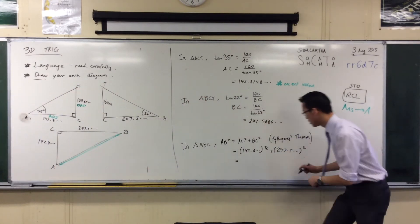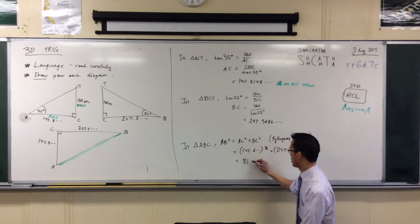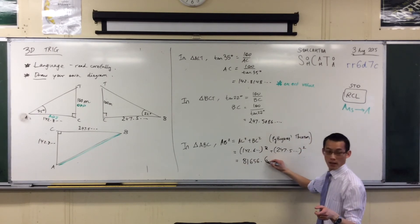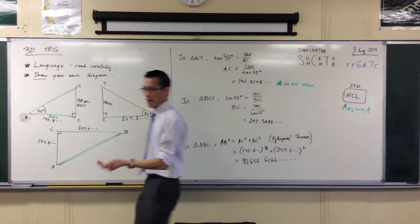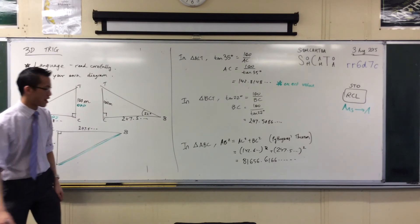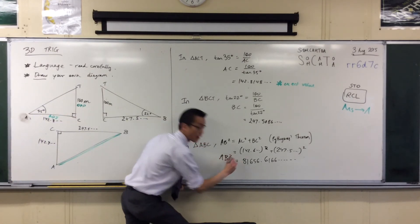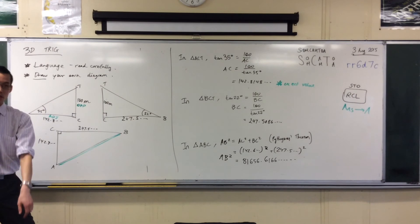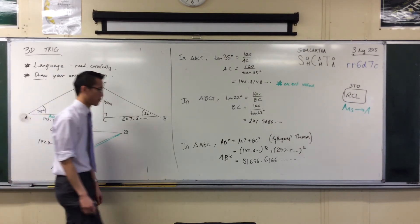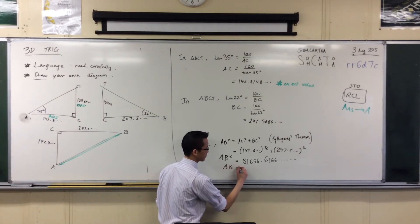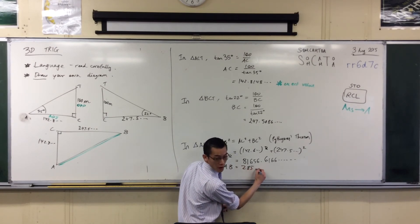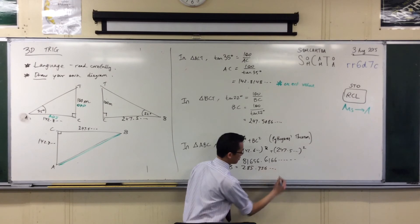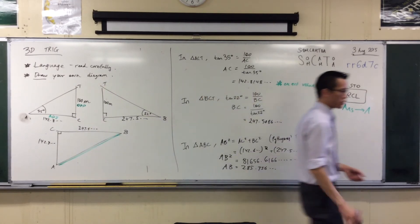Say that again, Kayla? 81656 and some decimal places? 61661? Okay, great. I'm almost there. This number is ridiculously large, and the reason why is because it's the distance squared. So with that number still in display, all you need to do is punch the square root button. Now I already worked this one out, so I've got 285 point something. Now I'm pretty much done.